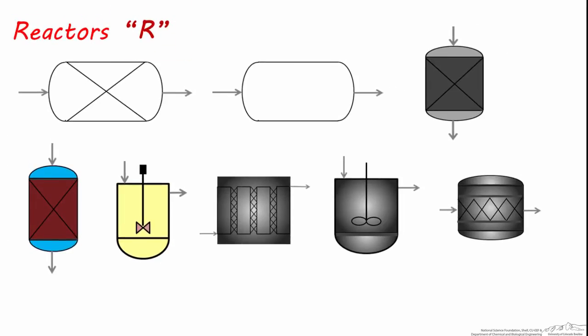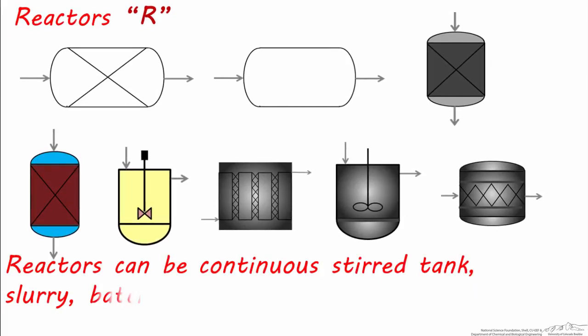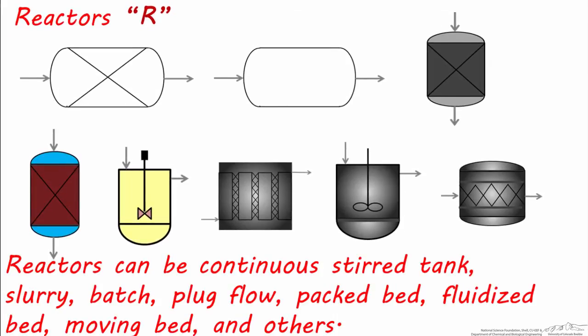There are quite a few choices among reactors, including continuous stirred tank reactors, batch reactors, plug flow reactors, packed bed reactors, fluidized bed reactors, moving bed reactors, and others. There are also many different symbols to represent them. Let's look at some of these reactors and how they're represented on a process flow diagram.